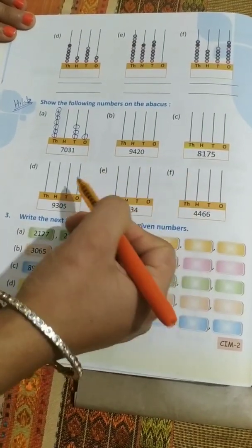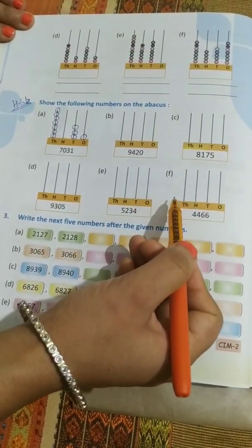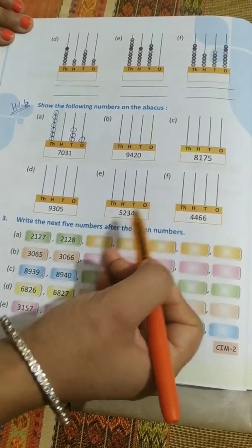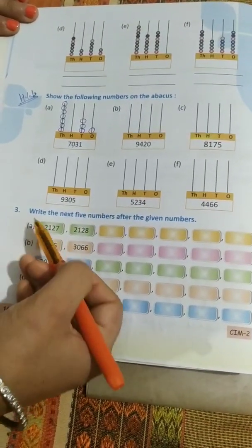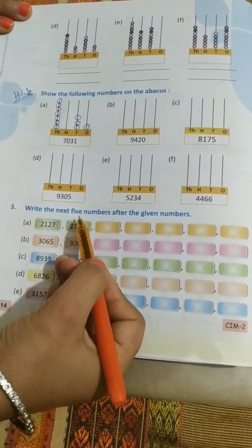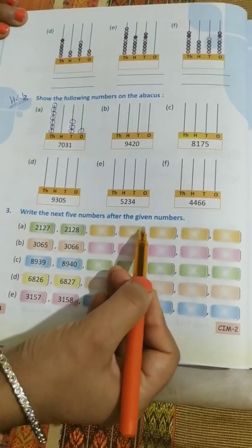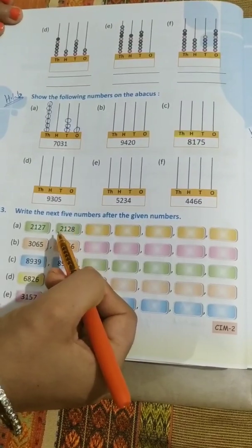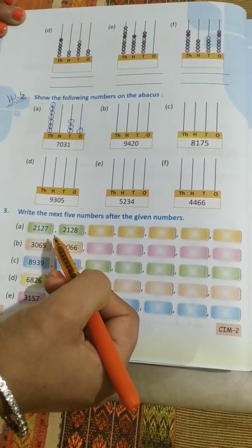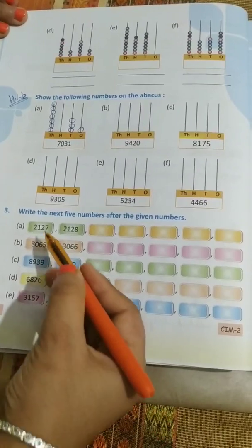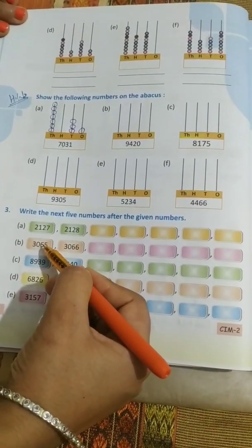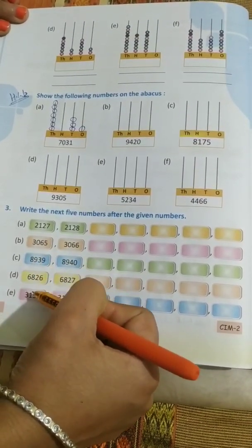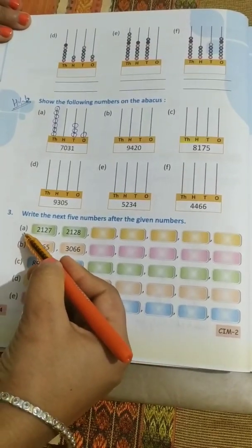rest of the parts are really very easy, you people can do it yourself. Question number 3: Write the next 5 numbers after the given number. This kind of question we have done in the first exercise also. The same way I will explain. I will explain only two parts of this question. Rest of the parts you have to do yourself. In the A part